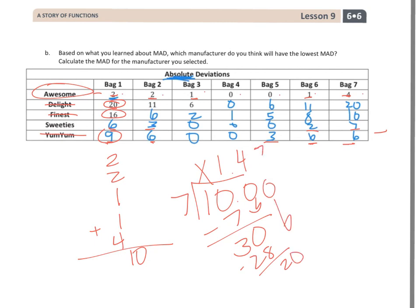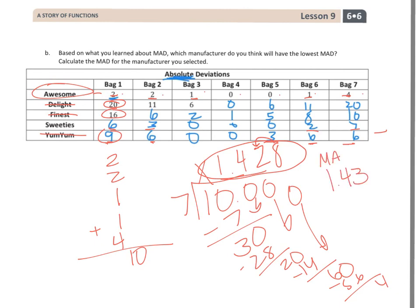And, looks like this one's going to go for a while. And, I'm going to stop right there. And, there's my mean absolute deviation. And, I'm actually going to round it to the nearest hundredth. So, I'll have 1.43. Is my mean absolute deviation for Awesome.